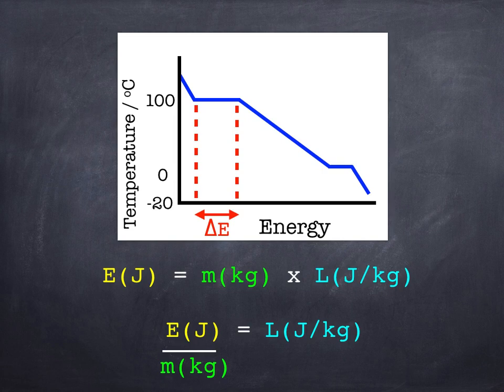What you need to do is draw two lines vertically down: one from the start of the change of state and one from the end of the change of state, both of those down to the x-axis.